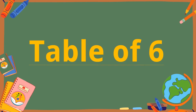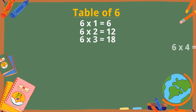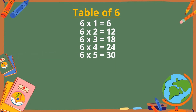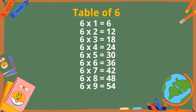Table of 6. 6×1 is 6, 6×2 is 12, 6×3 is 18, 6×4 is 24, 6×5 is 30, 6×6 is 36, 6×7 is 42, 6×8 is 48, 6×9 is 54, 6×10 is 60.